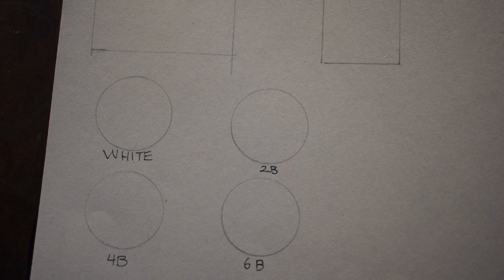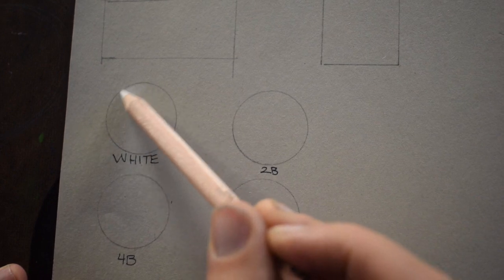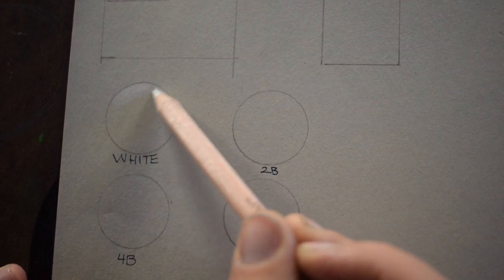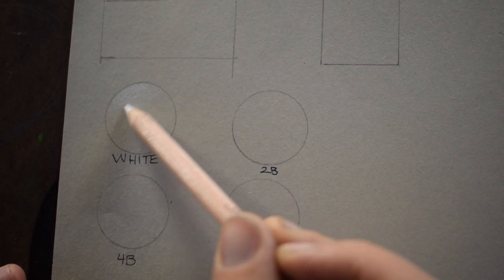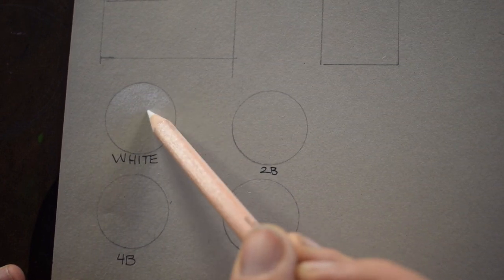Your first task, you should already have the outlines for all these, is to go ahead and go to the circles. You're going to be filling in the different types of pencils you have in your box. That way you get more familiar with them. And you're going to be starting with the white first.